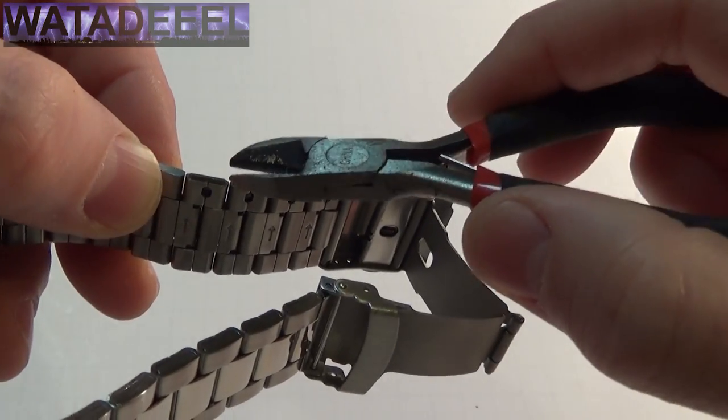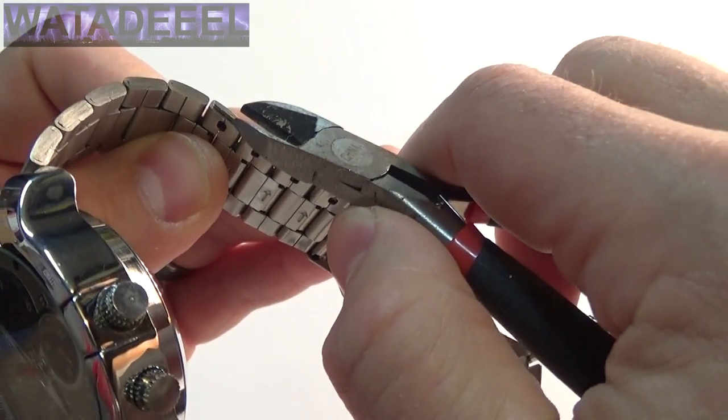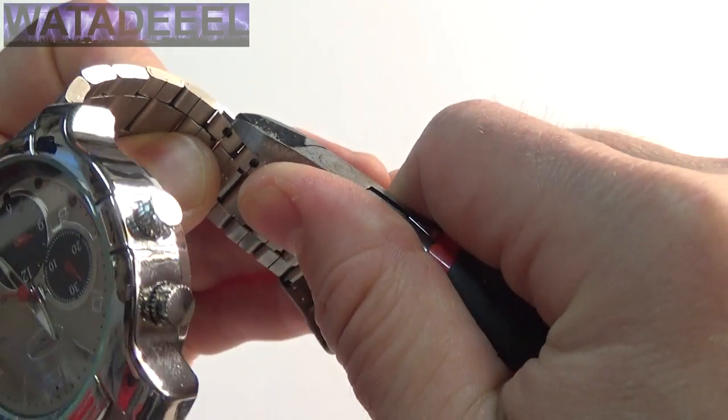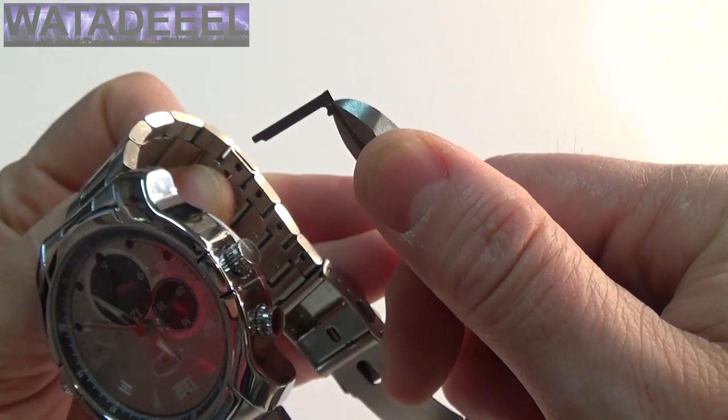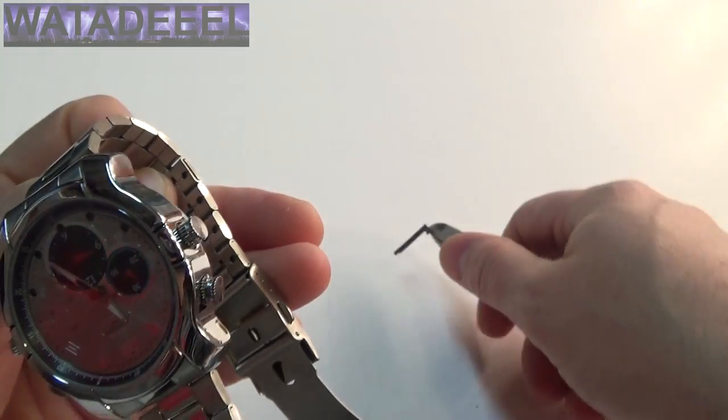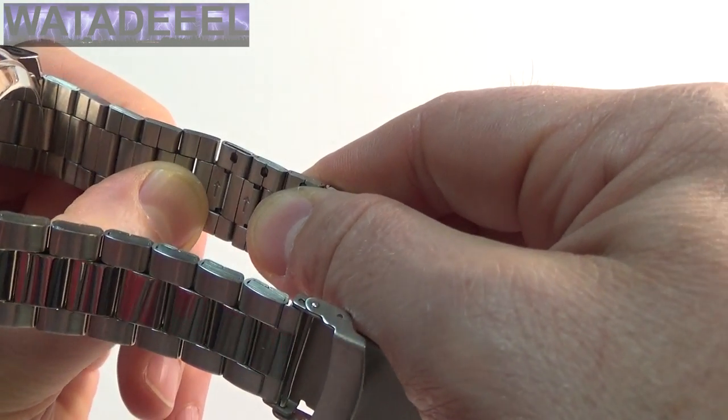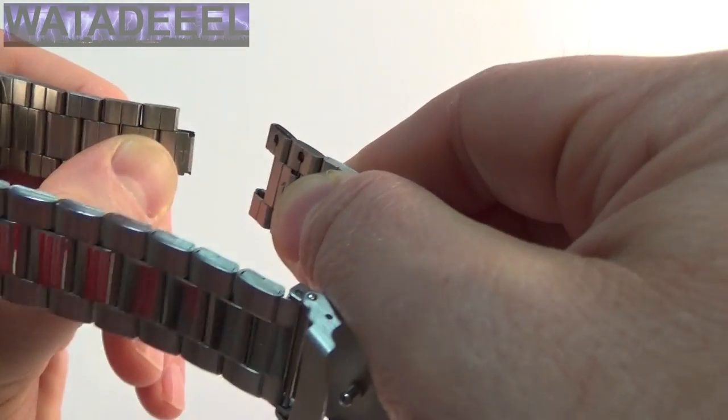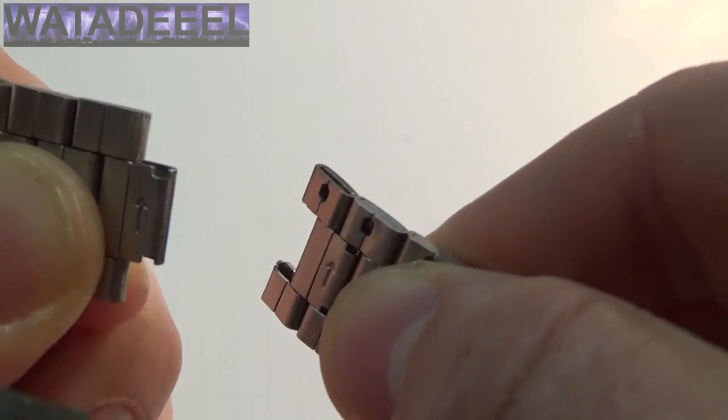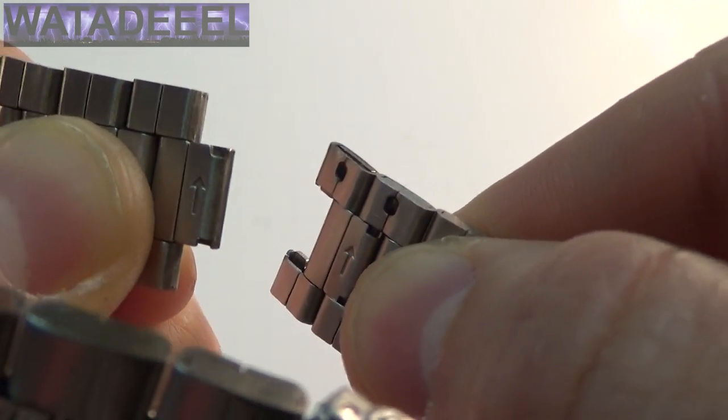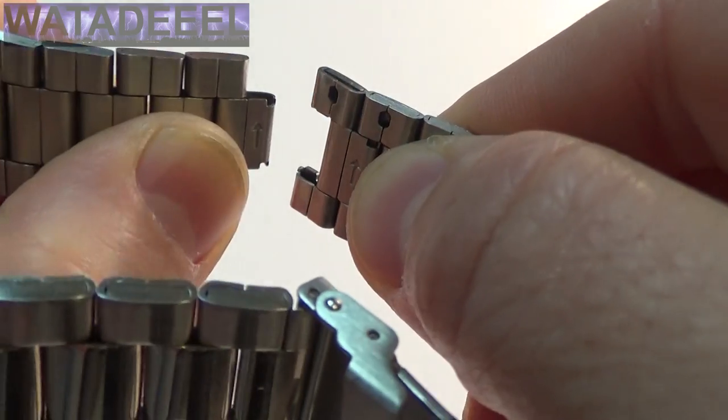And then you just use a pair of, well I'm just using side cutters for now because I can't find anything else. You just grip the link and that pin comes right out just like that. OK, so now once that pin is out, you rotate the watch this way and then slide it out. You can see how those notches are lined up. So you have to turn it at an angle.